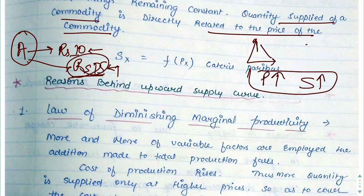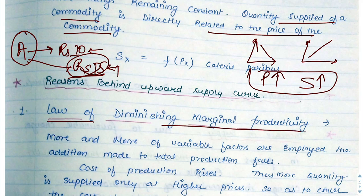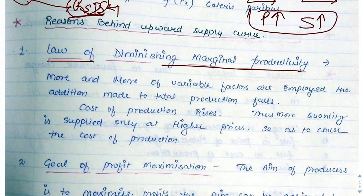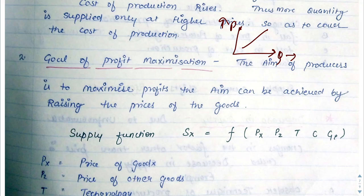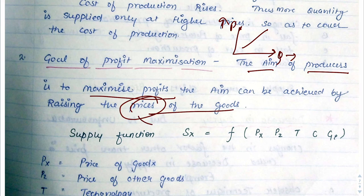Since demand had an inverse relationship, its curve was downward sloping. Since supply has a direct relationship, the supply curve will be upward sloping. One reason is the law of diminishing marginal productivity: as we add more labor, our output increases but cost also increases, so we raise the price. Another reason is the goal of profit maximization — producers increase prices to maximize profits, leading to more supply. So the supply curve slopes upward.